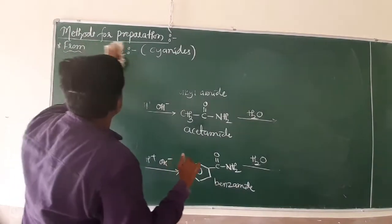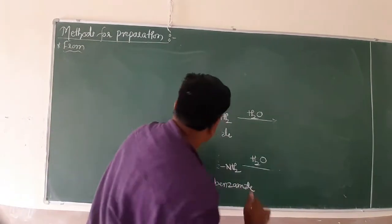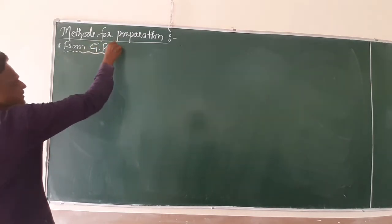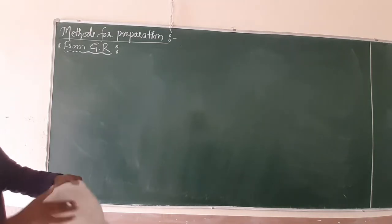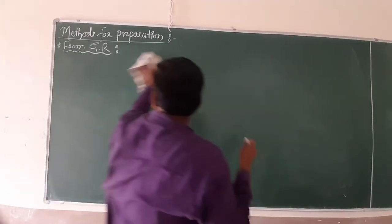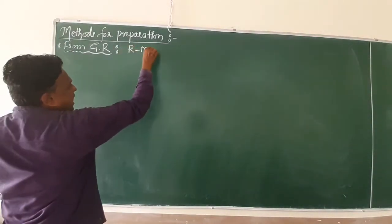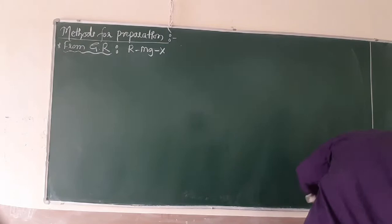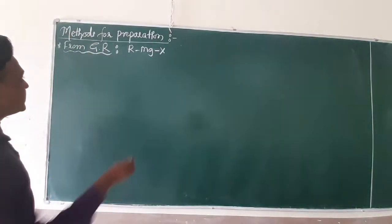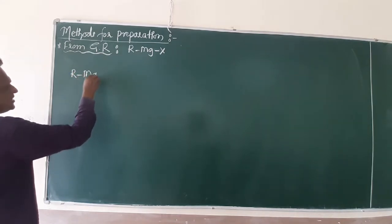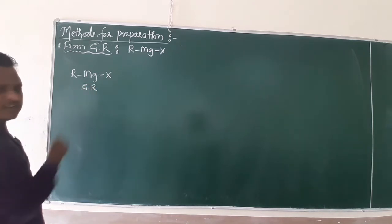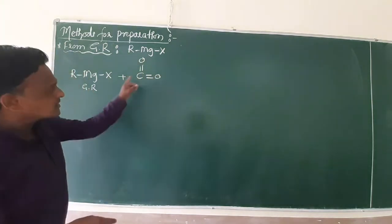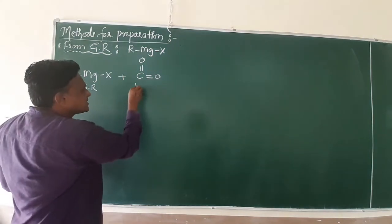Now we want the next important method of preparation — from Grignard Reagent, or GR. Grignard Reagent stands for R-MgX, which means alkyl magnesium halide. How to prepare carboxylic acid using Grignard Reagent? The simplest approach: R-MgX, written as GR, reacts with CO₂ — double mono means CO₂, commonly called carbon dioxide, also known as dry ice or solid carbon dioxide, which is used in the creation of artificial clouds.